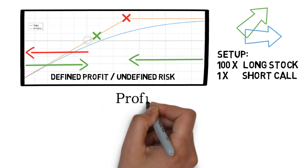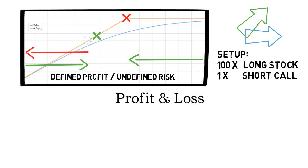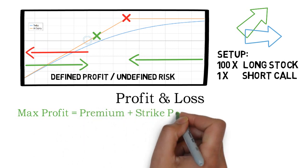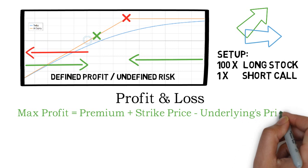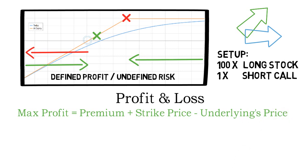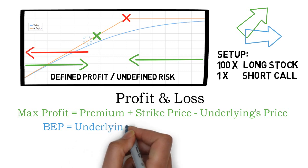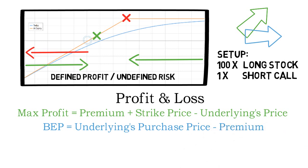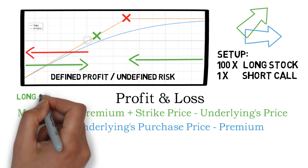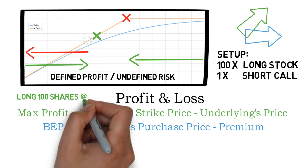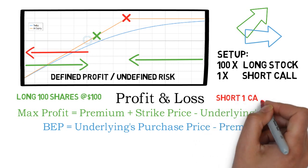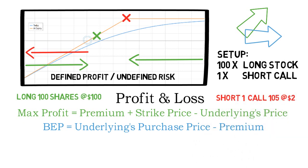Now let me move on to how to calculate the profit and loss of a covered call. To calculate the max profit, you need to add the strike price of the short call to the premium collected by the short call, and from that you subtract the underlying trading price when entering the long stock position. The break-even point can be calculated by subtracting the premium received by selling the call option from the underlying purchase price. To clarify this, let me present a short example. Let's say you put on a covered call position by buying 100 shares of the underlying stock at $100 and you sell one call option with a strike price of $105 for $2.